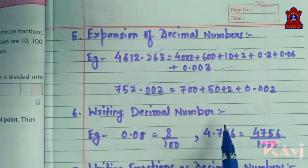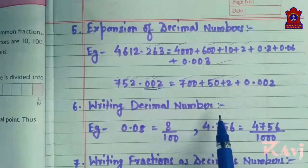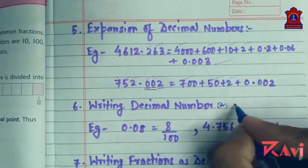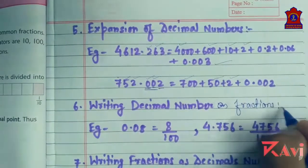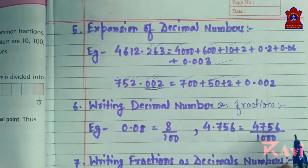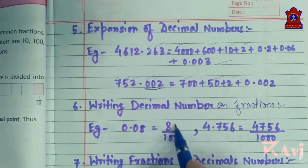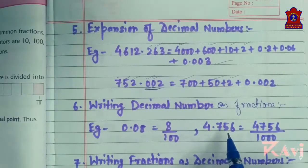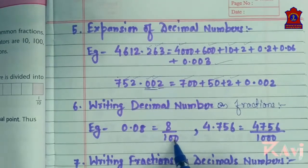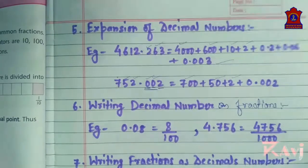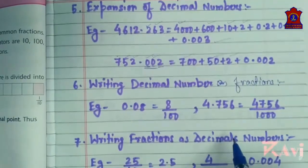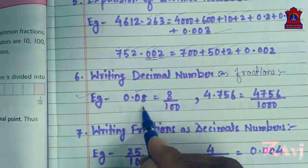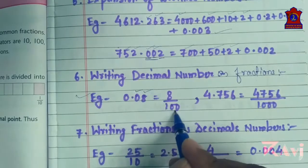Next is writing decimal numbers as fractions. Write the decimal number without the decimal point in the numerator, and put 1 followed by as many 0s as there are decimal places in the denominator. For example, 0.08 — what is at the tenths place? Nothing. What is at the hundredths place? 8. So 8/100.